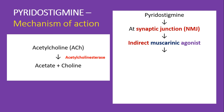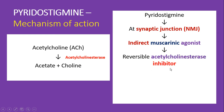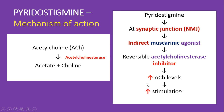Pyridostigmine is a reversible cholinesterase inhibitor. Once it inhibits acetylcholinesterase activity, acetylcholine levels increase, leading to enhanced stimulation of both nicotinic and muscarinic receptors.